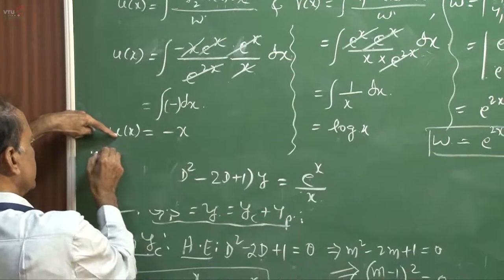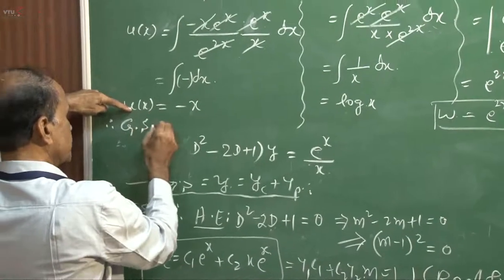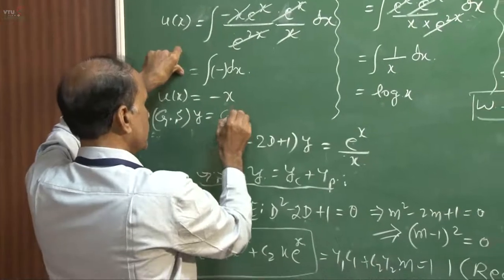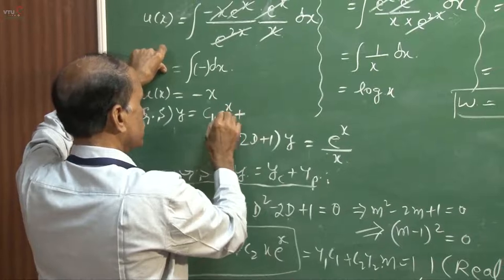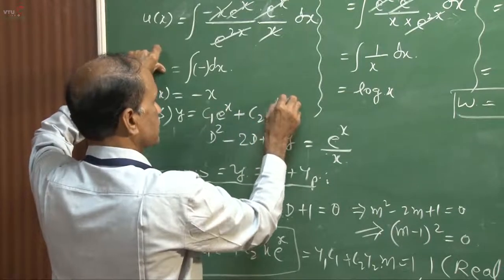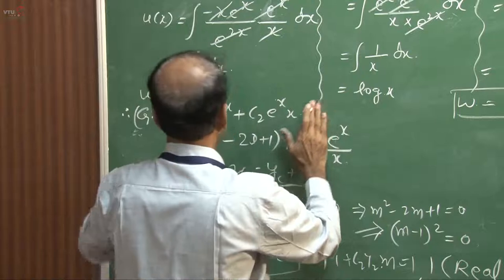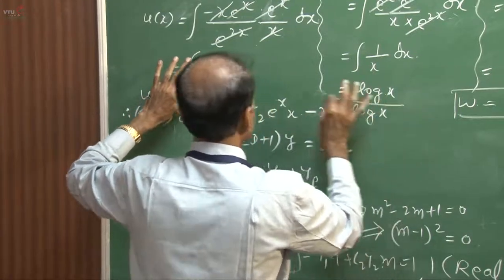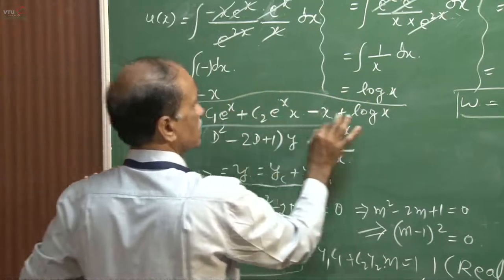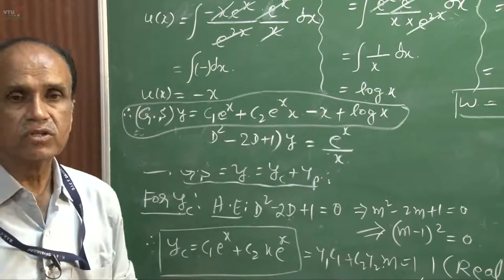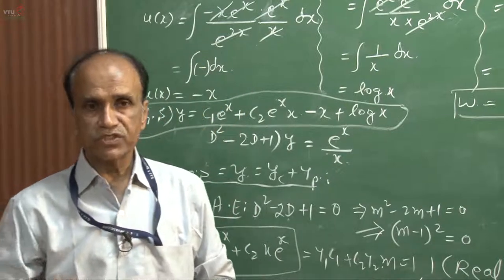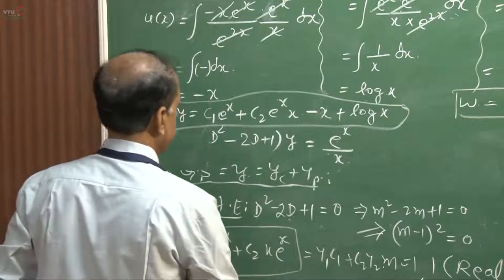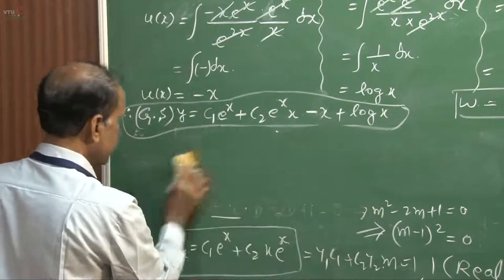With ux equal to minus x and vx equal to log x, and the complementary function established, the general solution is y equal to c1 e to the power x plus c2 x e to the power x, plus ux which is minus x, plus vx which is log x. This is the complete general solution combining complementary function and particular integral.